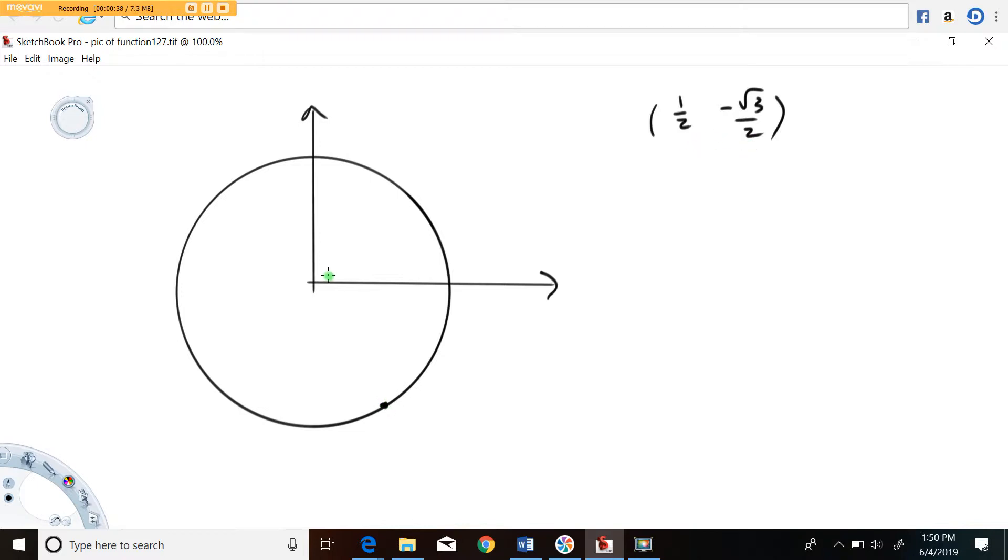The angle that corresponds to this, if I were to draw it, let's see, this is my terminal ray. It just keeps going. And the angle looks like this. Here's some angle theta that corresponds to that point on the unit circle. So again, the coordinates here are one half minus root three over two.